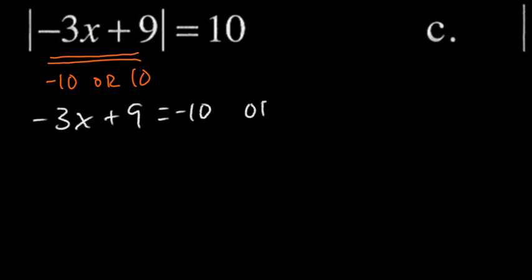So again, looking inside, the question is, what can this thing be? This can either be negative 10. That would produce an absolute value which would produce 10. Or this could be positive 10. So we'll just write both equations. So we'll write negative 3x plus 9 is negative 10, or negative 3x plus 9 equals positive 10.